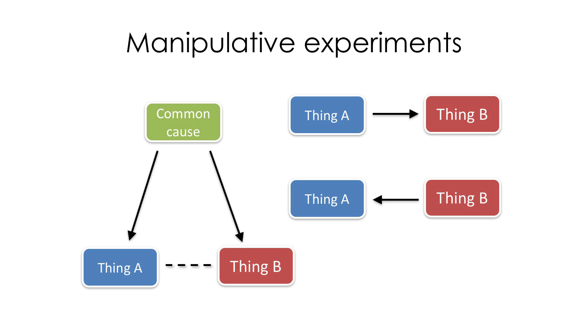So suppose we want to figure out whether, you know, we know that thing A and thing B are correlated, and we want to figure out, is there a causal arrow here? Is there a common cause? What's going on? We can go in and we can perturb things.